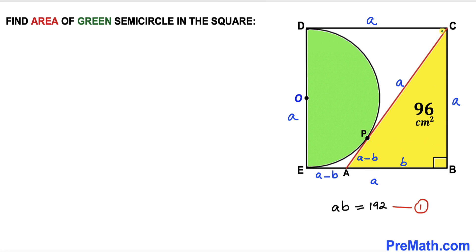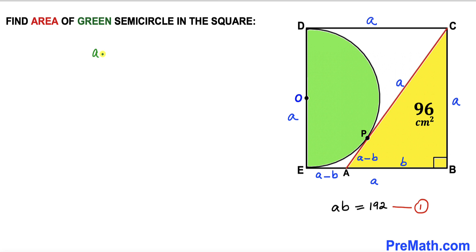Now let's observe that length AC is the sum of the two individual lengths AP and PC. Adding these gives A plus (A minus b), which equals 2A minus b. So our AC length turns out to be 2A minus b.